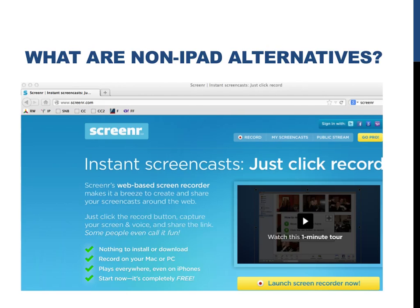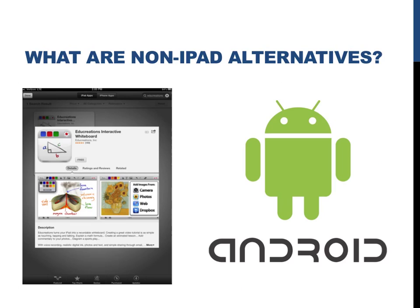Since many people may want a free screencasting tool or may not have an iPad, I thought I'd go through and recommend some different resources. If you have a Mac, a PC, or just want to use the web to create a screencast, you can use Screenr, found at www.screenr.com. If you have an iPad but don't want to pay for Explain Everything, EduCreations is supposed to be a pretty good app. I couldn't find a single Android app for screencasting, so if you happen to know of one, please let me know and I'll add it to this page.